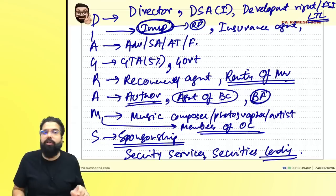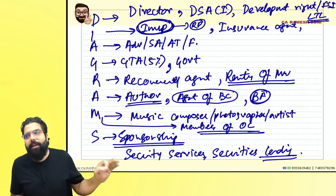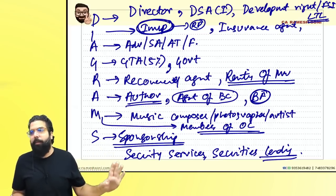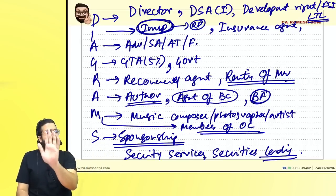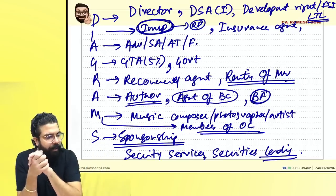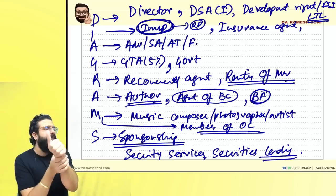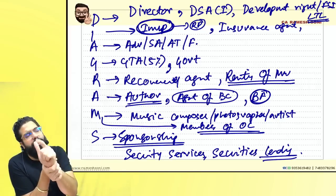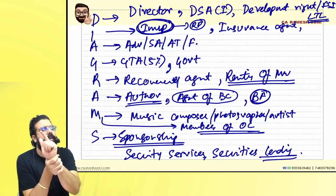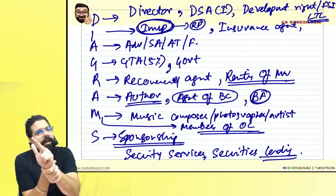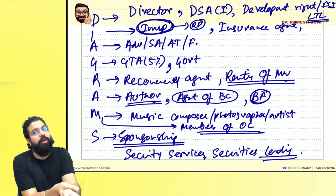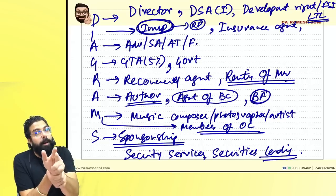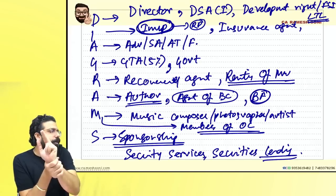Development right (D) also includes transfer of development right, floor space index (FSI), or long-term lease where land is given to a promoter — RCM comes on the promoter.